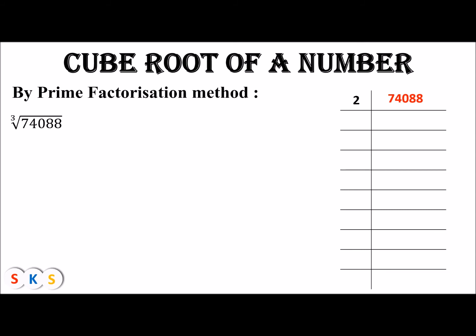When you divide 74,088 by two, you get 37,044. The last digit four is divisible by two, so we divide again — 37,044 divided by two gives 18,522. The last digit two is also divisible by two, so we divide once more — 18,522 divided by two gives 9,261. The last digit of 9,261 is one, which is not divisible by two, so we try the next prime number.